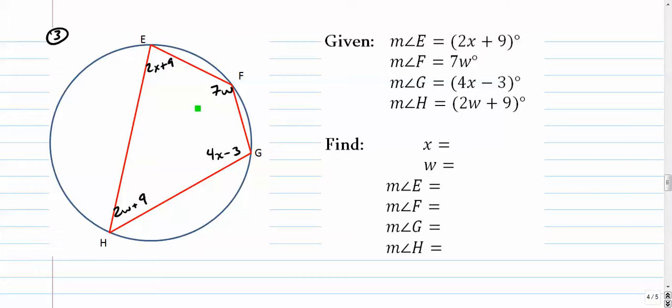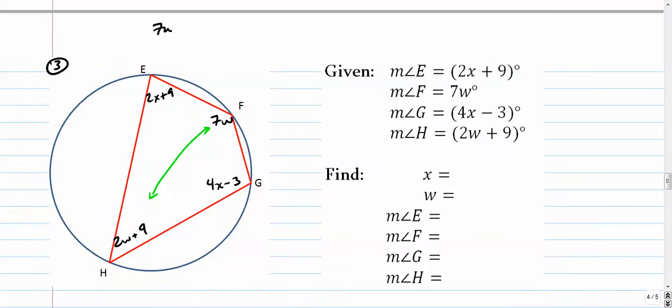Start with the w's, I guess. Add those together. Set them equal to 180. So we have 7w plus 2w plus 9 equals 180. That's 9w plus 9 equals 180. 9w equals 171. I subtracted there.